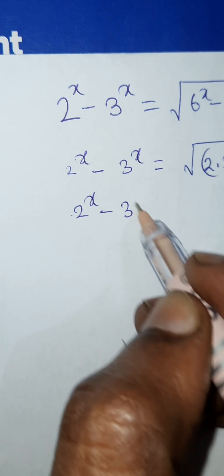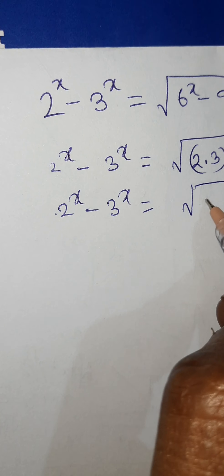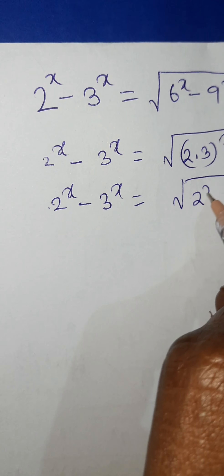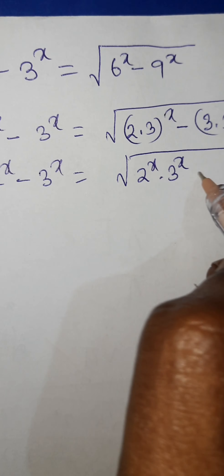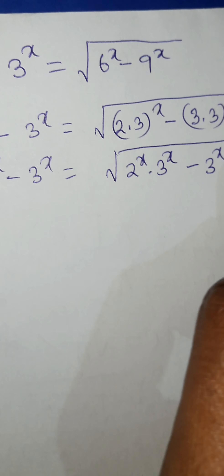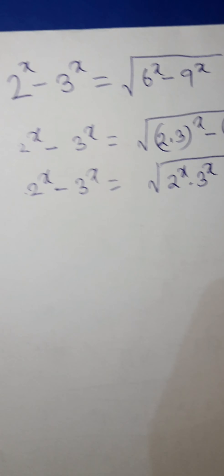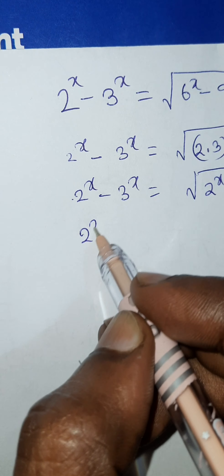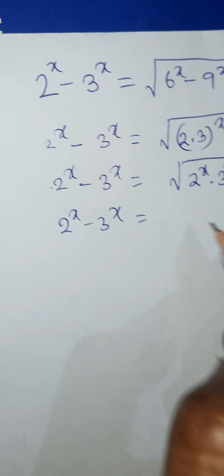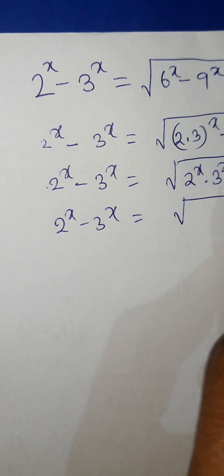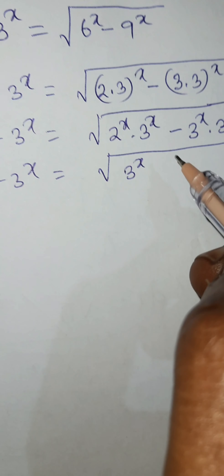So 2 to the power x minus 3 to the power x is equal to the square root of 2 to the power x times 3 to the power x minus 3 to the power x times 3 to the power x. Here 3 to the power x is common inside the square root.